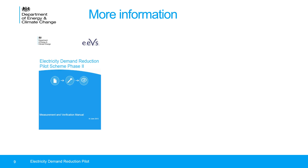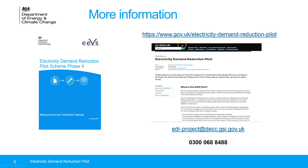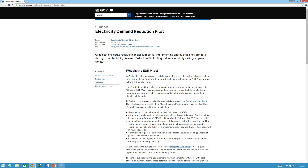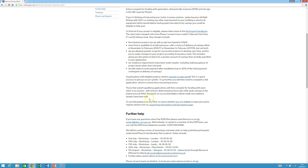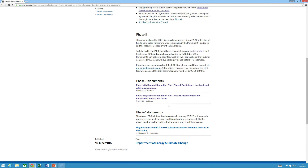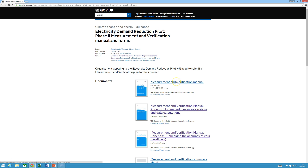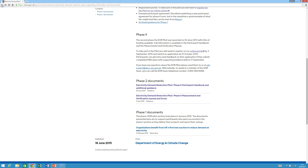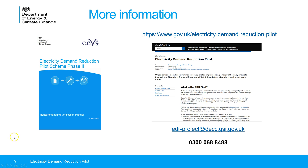For more information, the key resource is the measurement and verification manual, which contains all the detail on the different approaches and an overview of everything you need to know. There is also the EDR website, and if you have any questions you can contact us by email at edr-project@decc.gsi.gov.uk or by phone on 0300 068 8488. To download the manual, go to the EDR webpage, click on 'Supporting information and documents', scroll down to the measurement and verification manual section, and click to download. That concludes video two.